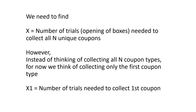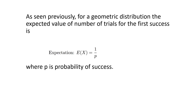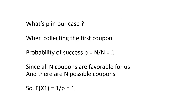Instead of thinking of collecting all n coupons, let us think of collecting only the first coupon and denote this by random variable X1, which is the number of trials needed to collect the first coupon. For a geometric distribution, the expected value of number of trials for first success is 1 over p, where p is the probability of success. When focused on collecting just the first coupon, all n coupons are favorable since we haven't collected any, so p equals n over n which equals 1. Thus the expected value of number of trials is 1 over p, which is also equal to 1.